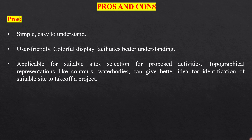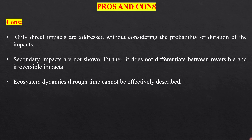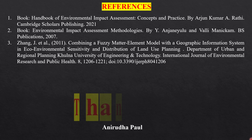Like every method, this method also has advantages and disadvantages. The pros are: it is very simple, easy to understand, user-friendly, with colorful display facilities for better understanding; applicable for suitable site selection for proposed activities; and topographical representations like contours and water bodies can give a better idea for identifying suitable sites. The cons are: only direct impacts are addressed without considering the probability or duration of impacts; secondary impacts are not shown; it does not differentiate between reversible and irreversible impacts; and ecosystem dynamics through time cannot be effectively described.